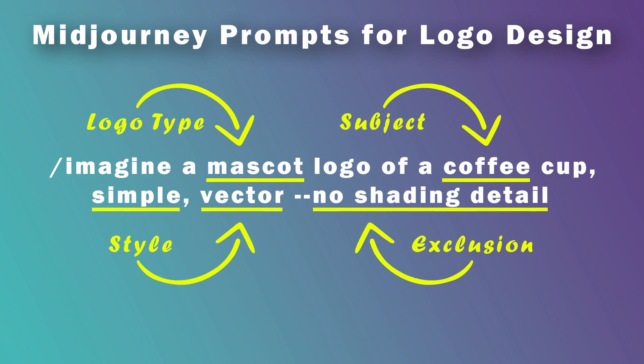In all of these examples I have used exclusions. The way you do that is with double dash and 'no' followed by whatever you don't want — for example, 'no shading detail,' which adds 3D dimension if you want a flat logo. One thing people do that I don't think works too well is putting 'no text,' because if you're trying to create an emblem logo it needs to have text in order to produce an appropriate logo.